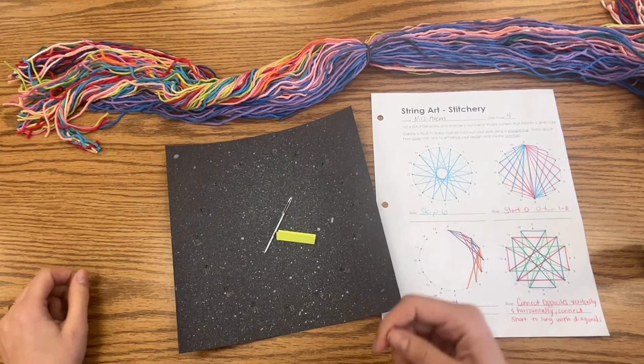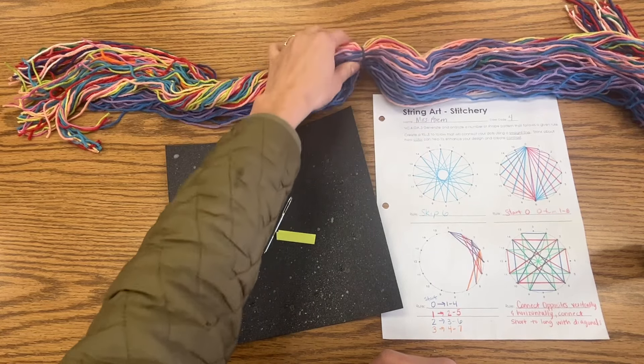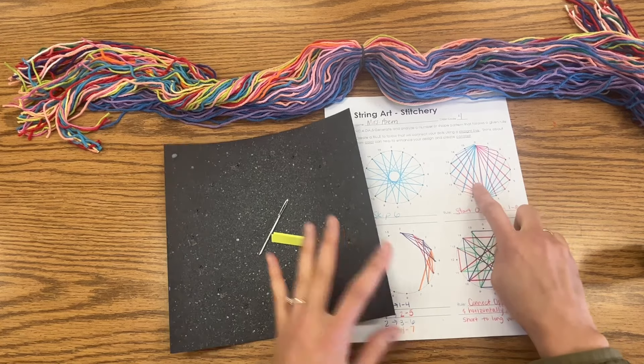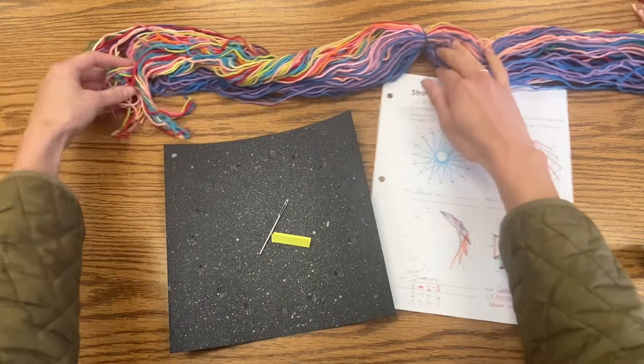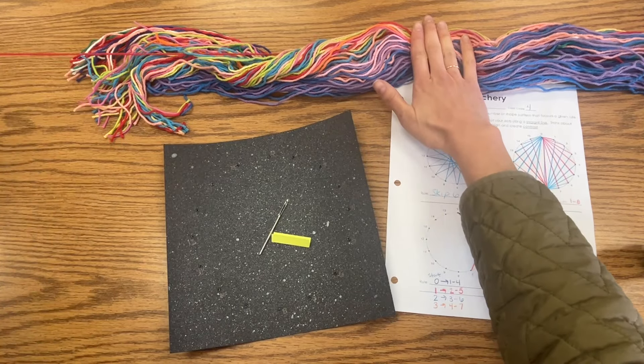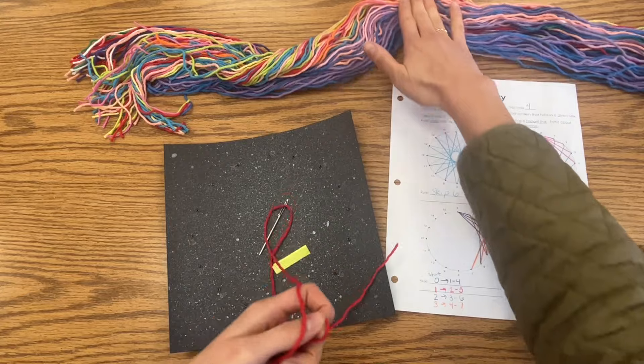Once your tape is prepared, you're going to get your first string from what is affectionately known as the yarn monster. I'm going to be working on this design, so I'm going to start with red. I'm going to grab probably the end, find the red color that I want, hold the middle, and I should just be able to pull and then my piece pops out while the rest stays nice and neat.